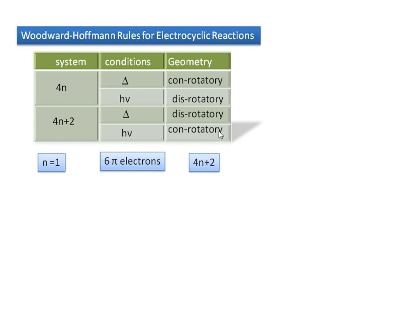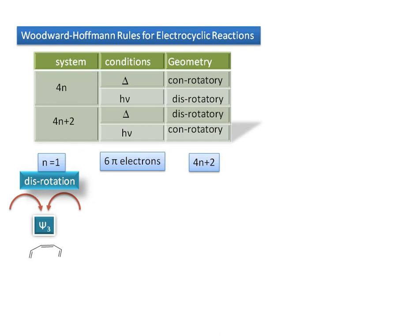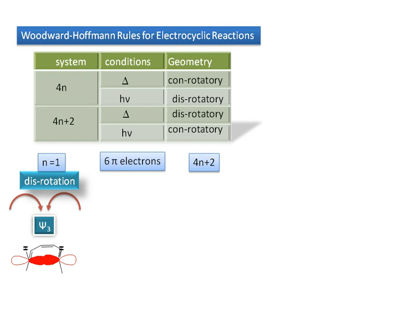First we consider the thermal condition. For this we perform disrotation. In disrotatory mode, the atomic orbitals of the end groups turn in opposite directions. For this we consider Ψ3. One atomic orbital of the end group turns clockwise and the other turns in the opposite direction.